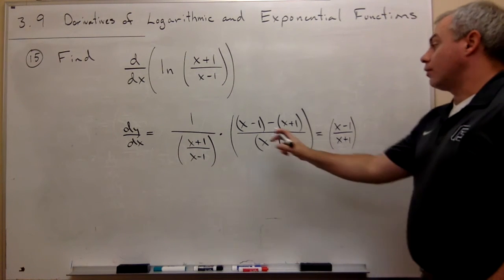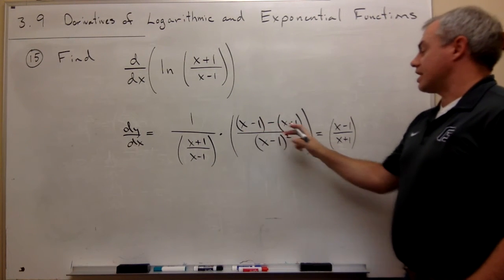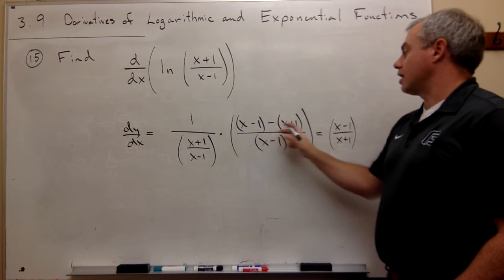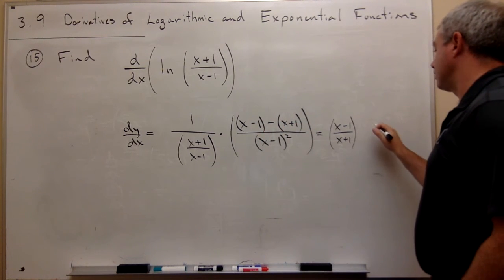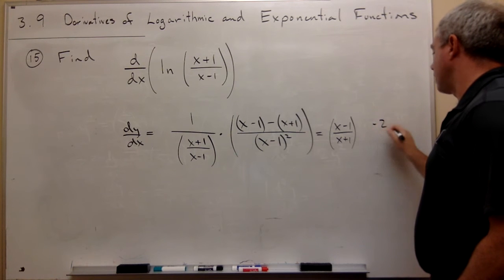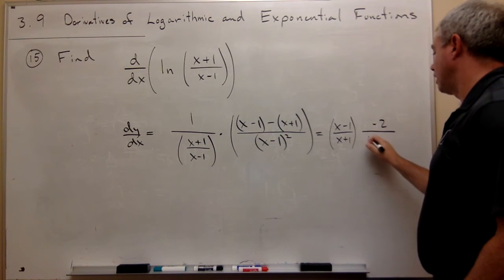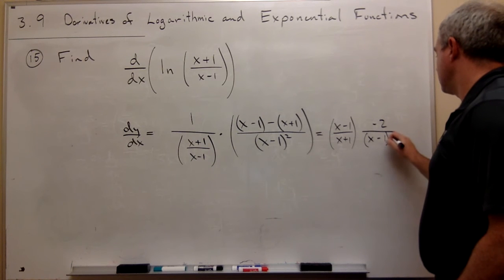And then we say this is x minus x, which is 0, and then I get -1 - 1, which is -2. So on top here, we have a -2 over (x-1)².